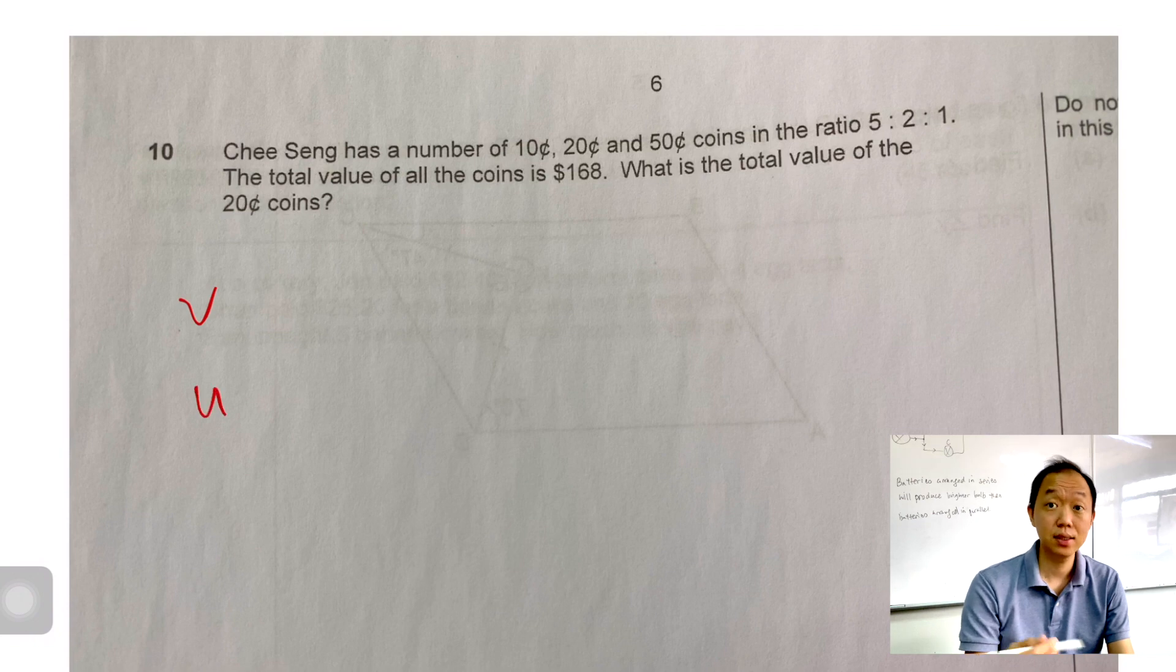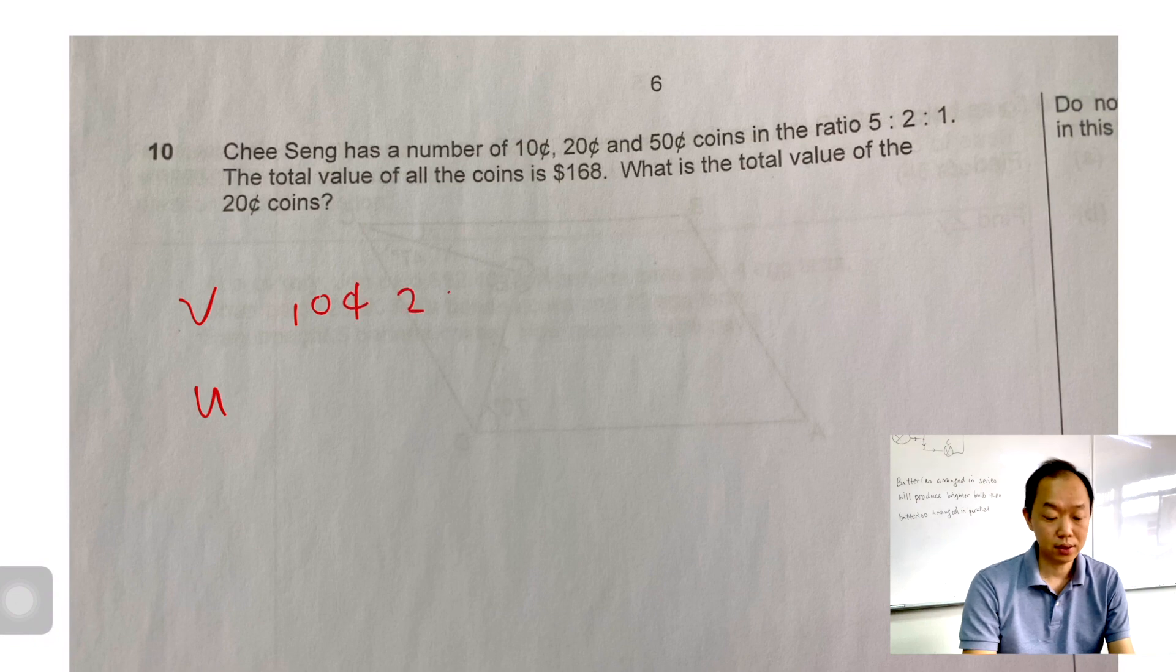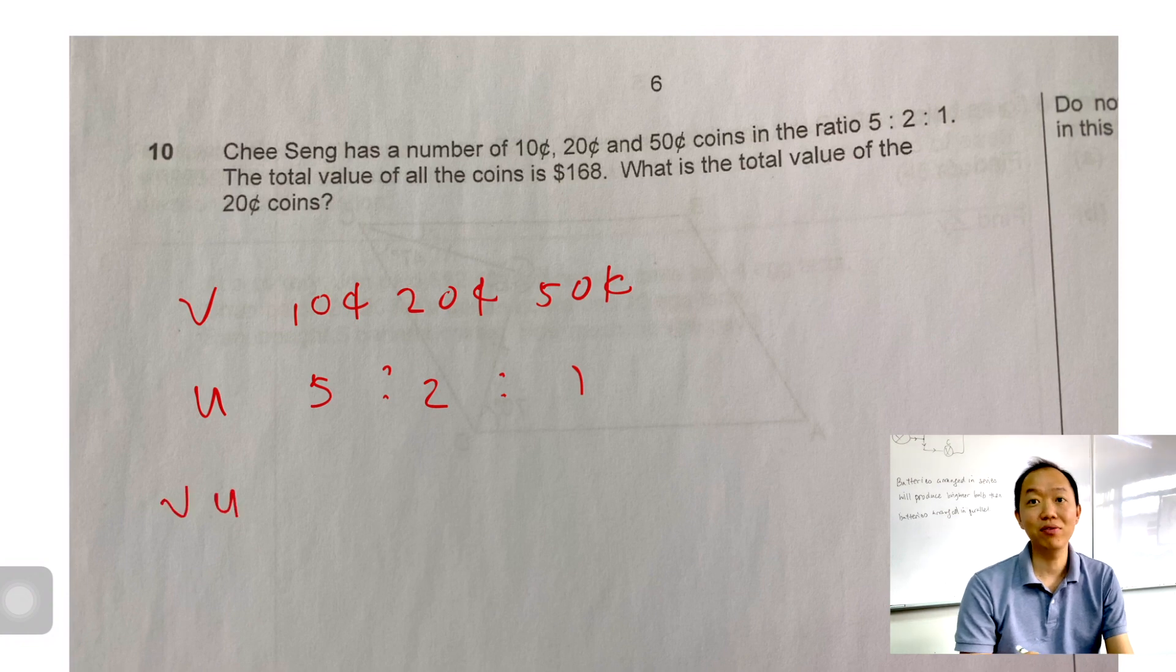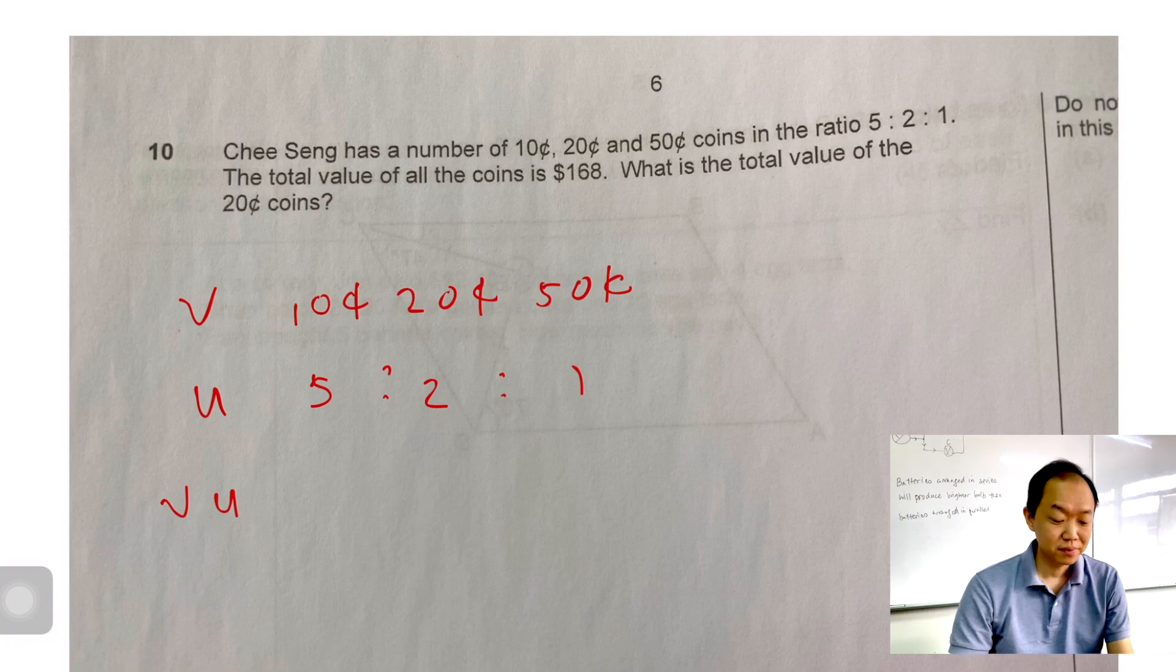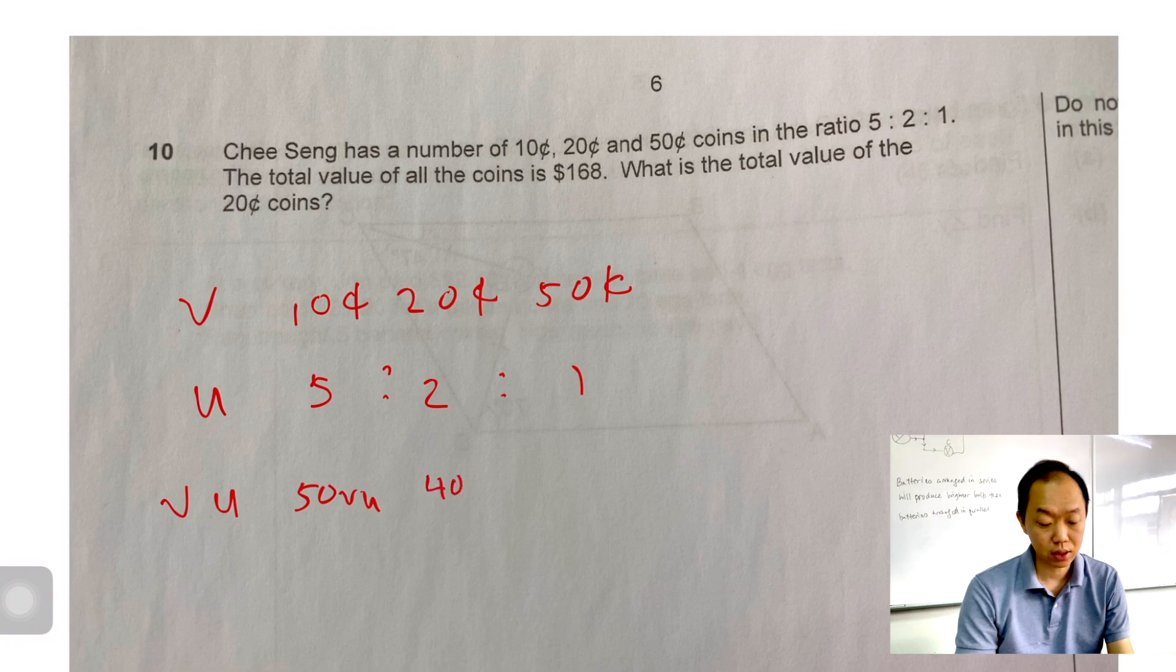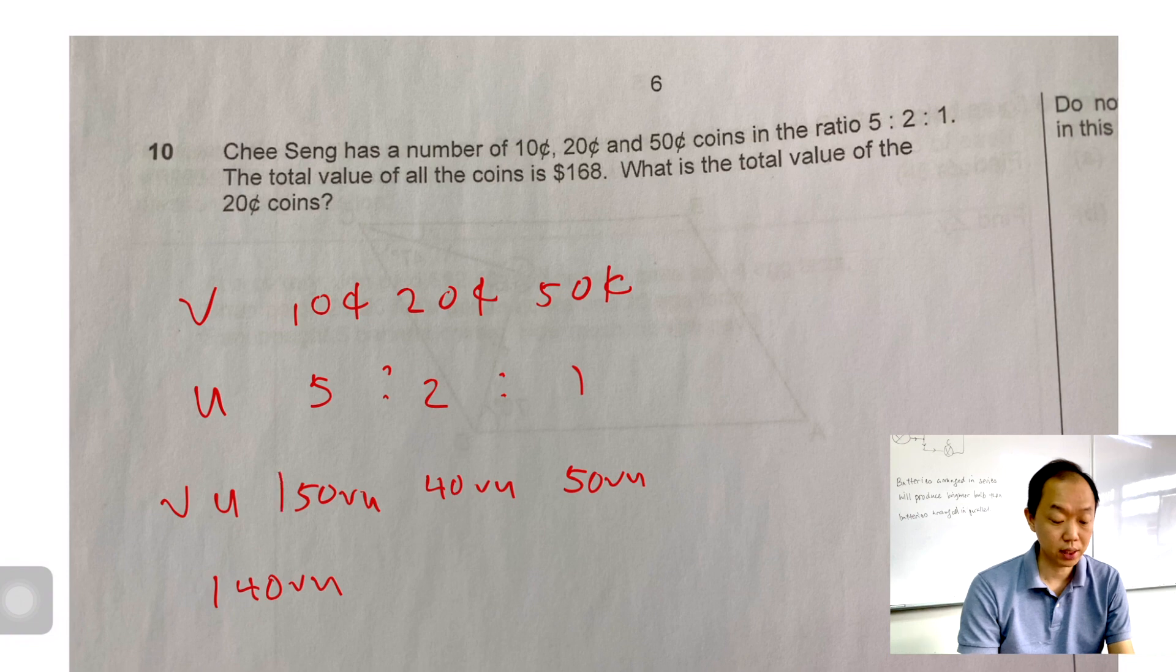How do you take value and units? This is VU. So value, there's a $0.10, there is a $0.20 and there's $0.50 coins. Now the units, it's 5 to 2 to 1. The next step of finding or solving VU questions is to find VU. You must find VU. How do you find VU? You take value times unit. So 5 times 10 cents, that's 50 VU. Then 20 times 2, that's 40 VU. 1 times 50, that's 50 VU. Now the total number of VU is 140. That is if you take 50 plus 40 plus 50, you get 140 VU.